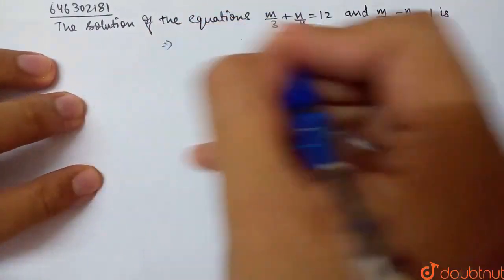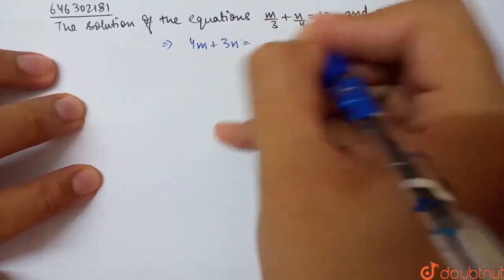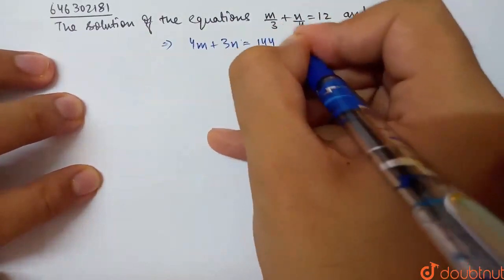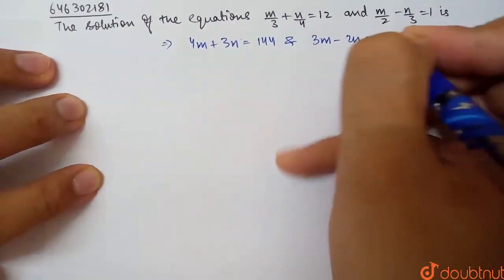Okay, first of all, we will cross multiply. The first equation gives us 4m + 3n = 144. For the second equation, cross multiplying gives 3m - 2n = 6.